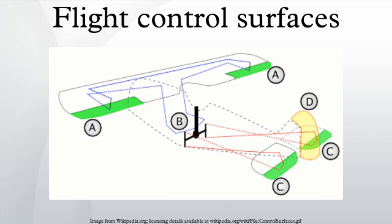The elevator is a movable part of the horizontal stabilizer, hinged to the back of the fixed part of the horizontal tail. The elevators move up and down together.